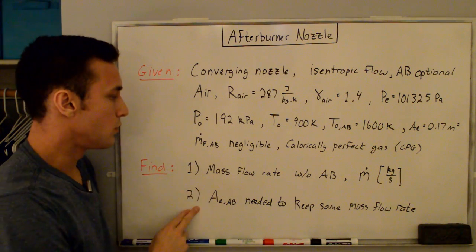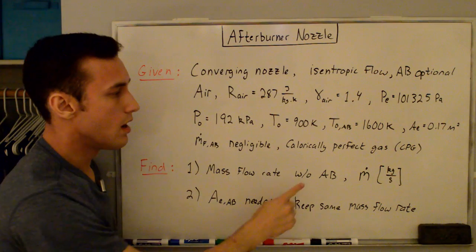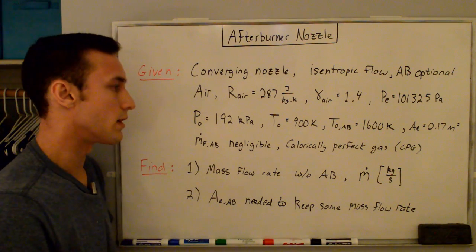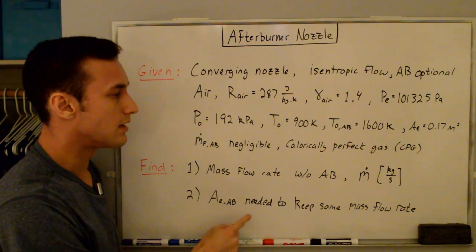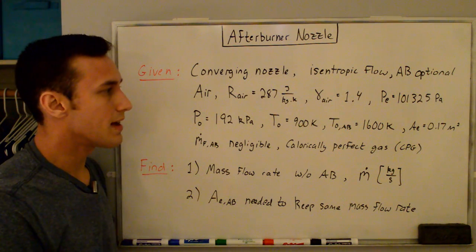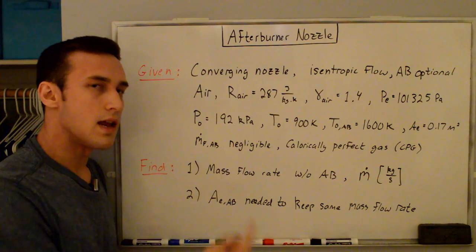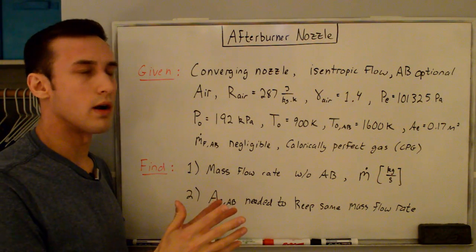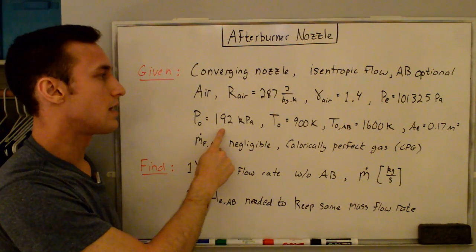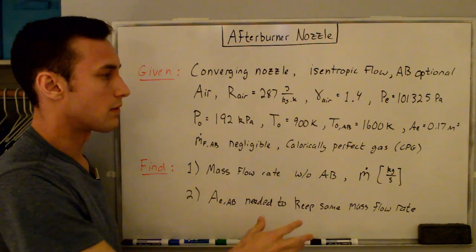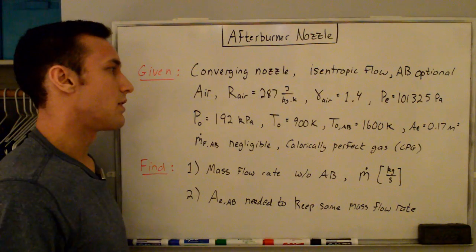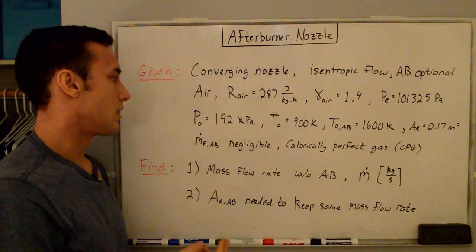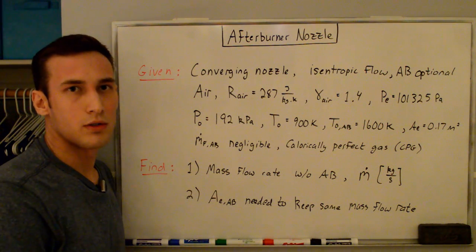The solution is a two-step process: first, find the mass flow rate without the afterburner; second, find the nozzle exit area with the afterburner on that keeps the same mass flow rate. We want to keep the mass flow rate the same so we don't alter anything upstream when the afterburner is turned on. Similarly, the stagnation pressure stays the same for both cases, because changing the mass flow rate or stagnation pressure upstream could cause a compressor surge.